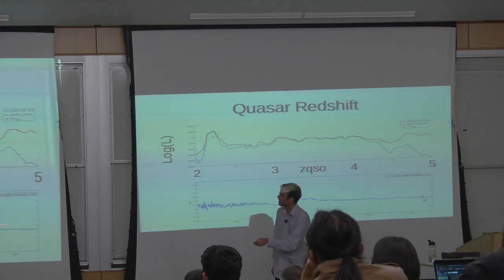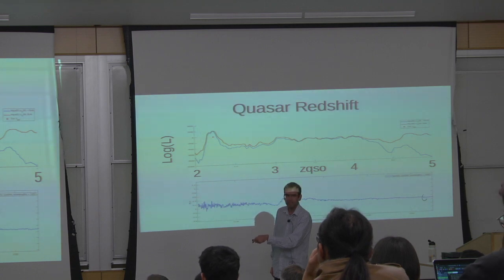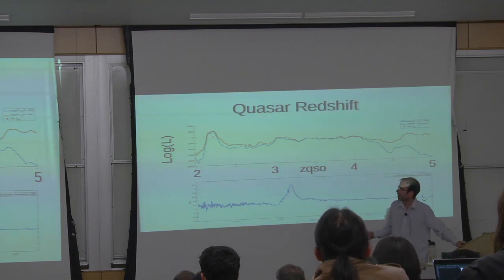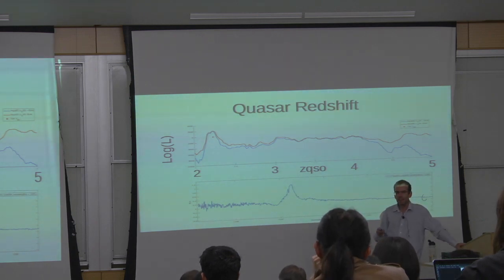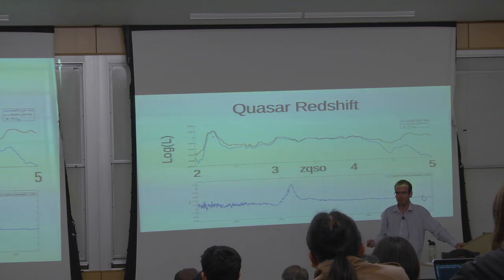I've shown the quasar in the rest frame at redshift 2.2. You can see there is a big peak at 1216 angstroms, just like you would expect, and there's an absorber here. So we've taken our model for the quasar used to detect DLAs, and extended it to detect multiple DLAs and to detect the quasar redshift. Both of these things are working really well. Thank you to the grad students who do the work.